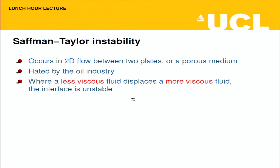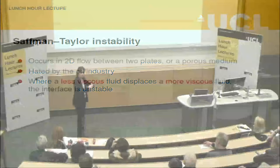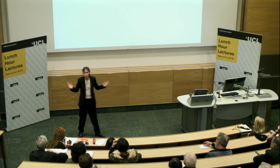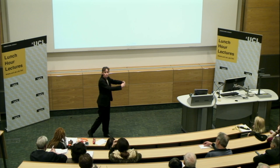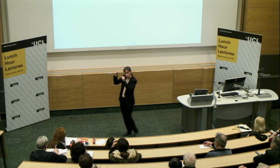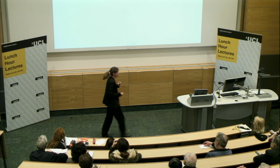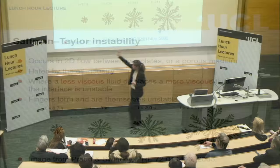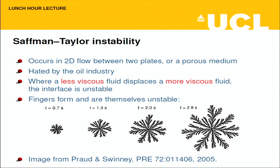The last instability for now is the Saffman-Taylor instability, hated by the oil industry. If you put a less viscous fluid behind a more viscous fluid — say water behind oil — and try to push the oil out with the water, it doesn't work. The interface is unstable and the water forms a finger and breaks through. Here's a picture: a black, not very viscous fluid is injected into a white viscous fluid. It forms fingers, and every time you get a flat front that's unstable too, so it forms more fingers. These are self-similar fractal patterns.